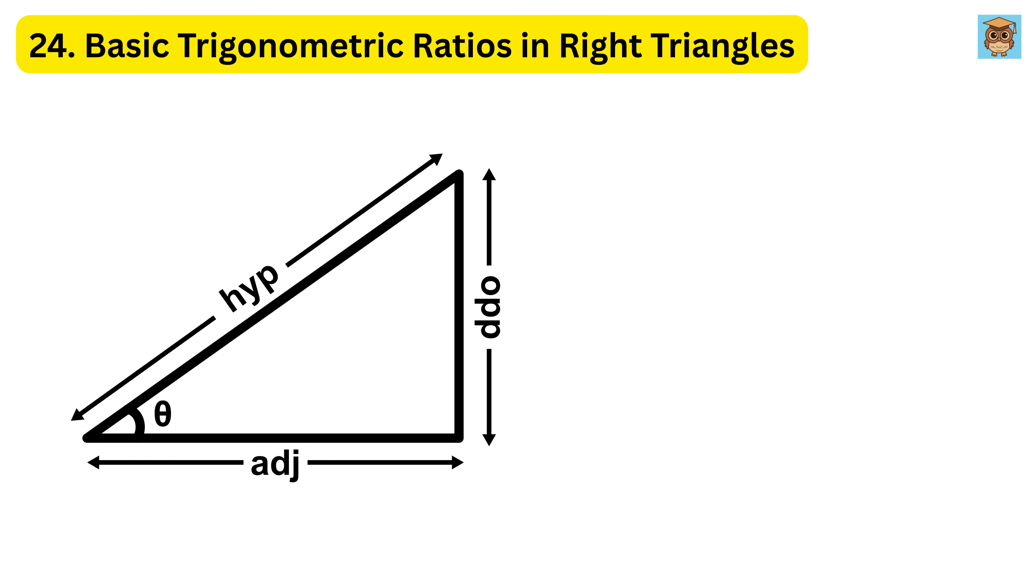24. Basic trigonometric ratios in right triangles. In a right triangle, the three basic trigonometric ratios help relate the sides to an angle, usually called theta. Sine is the opposite side divided by the hypotenuse. Cosine is the adjacent side divided by the hypotenuse. And tangent is the opposite side divided by the adjacent side.